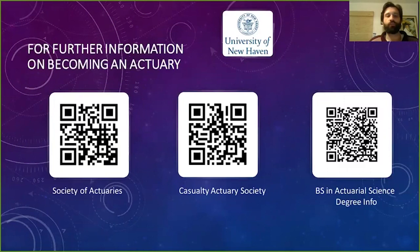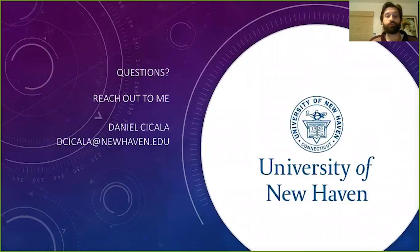On their websites you'll get to learn quite a bit more about the examination process and about what a career as an actuary is like day to day — they're really the best resources to learn about what being an actuary is all about. This third QR code will take you to the university website where you can get more information on the program and the sorts of classes you'll be taking.